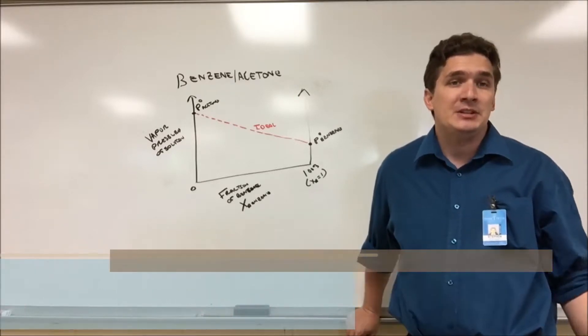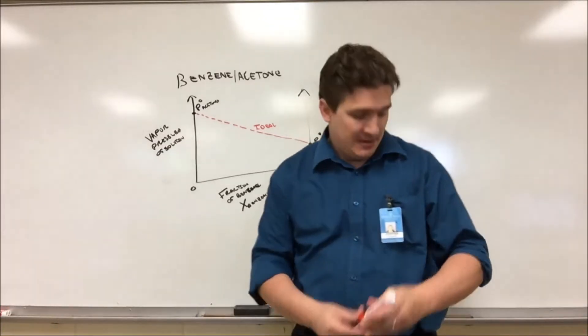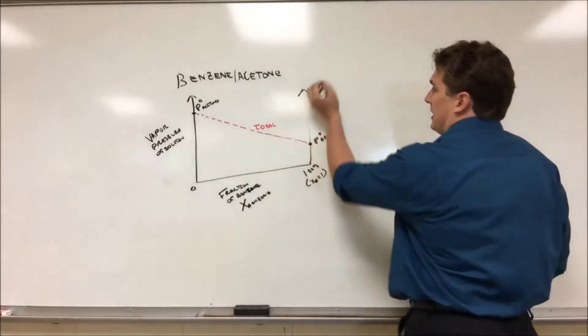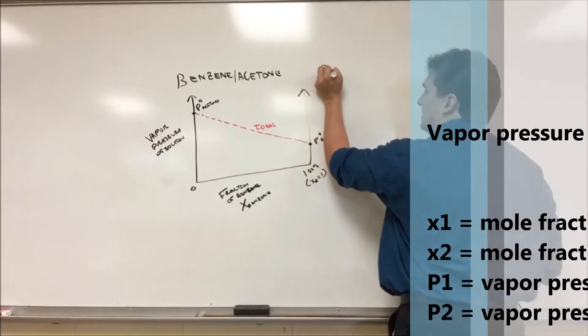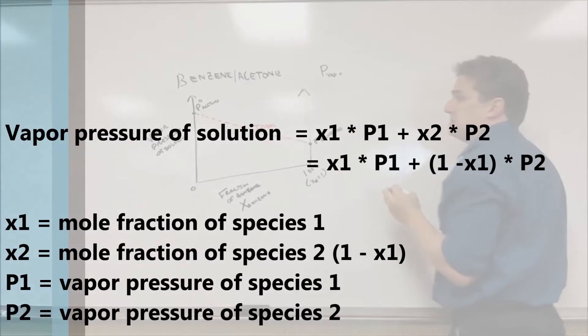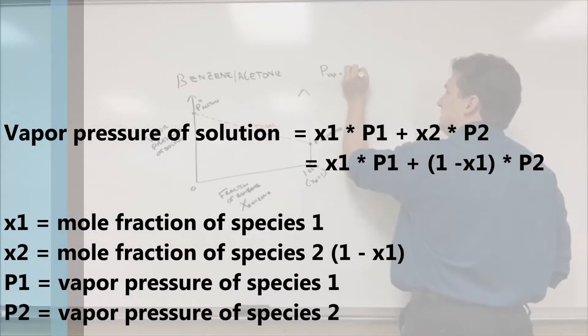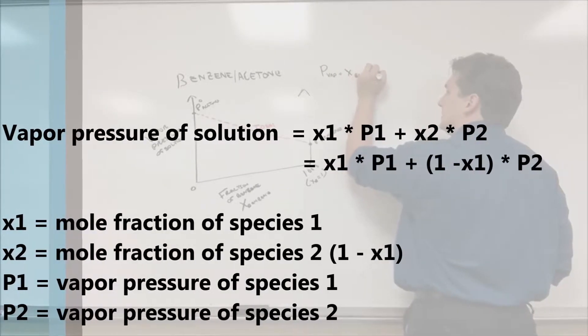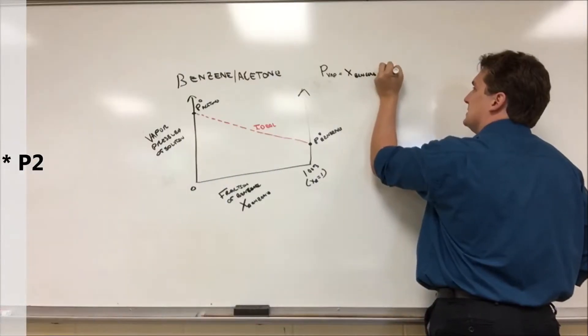That's a big way of saying that the vapor pressure P vap is equal to the fraction of benzene times the vapor pressure of benzene.